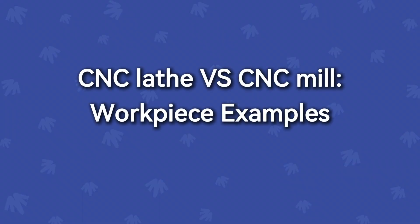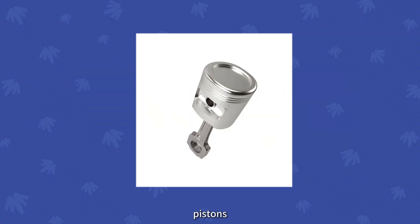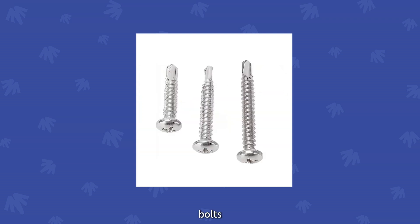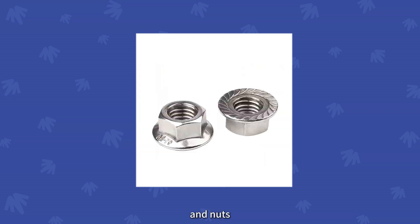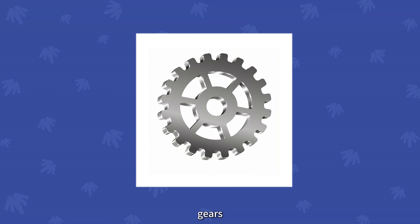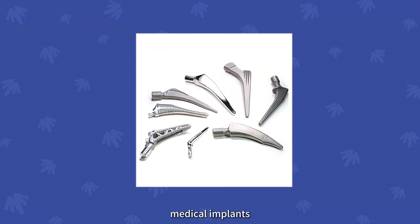Workpiece examples include: shafts, pistons, rolls, bolts, and nuts for CNC lathe; and impellers, gears, engine blocks, and medical implants for CNC milling.